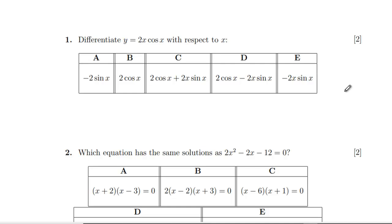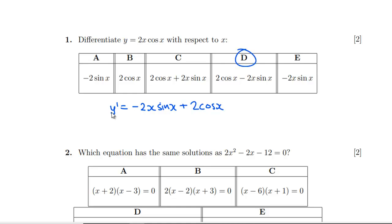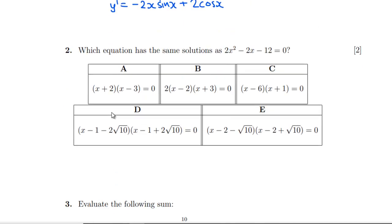We've immediately got a different feel at the start. Let's differentiate this with respect to x using the product rule. y' = leave 2x and differentiate the other, giving minus 2x sin x, then leave cos x and differentiate to get 2 cos x. Checking the answer choices, that matches D.